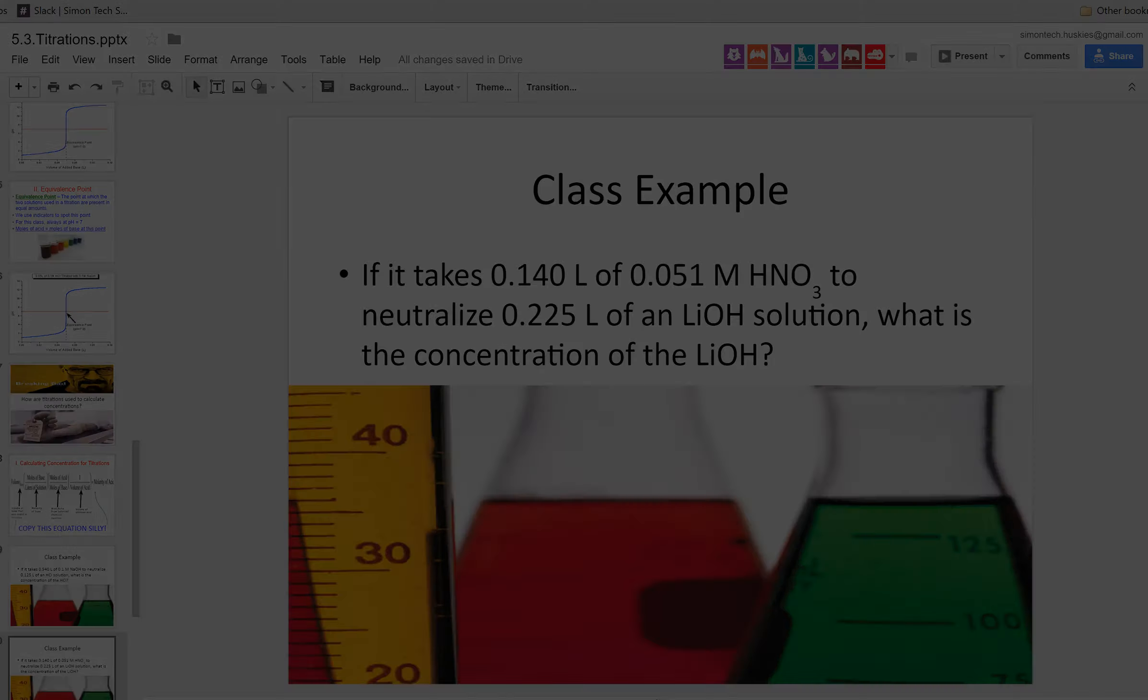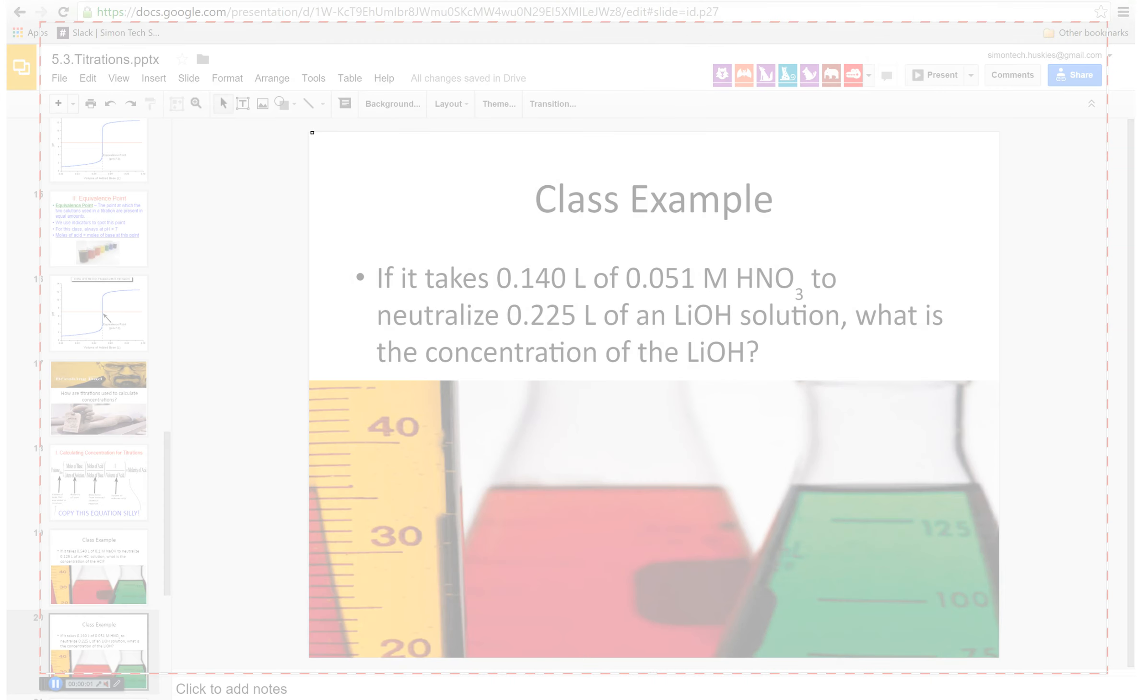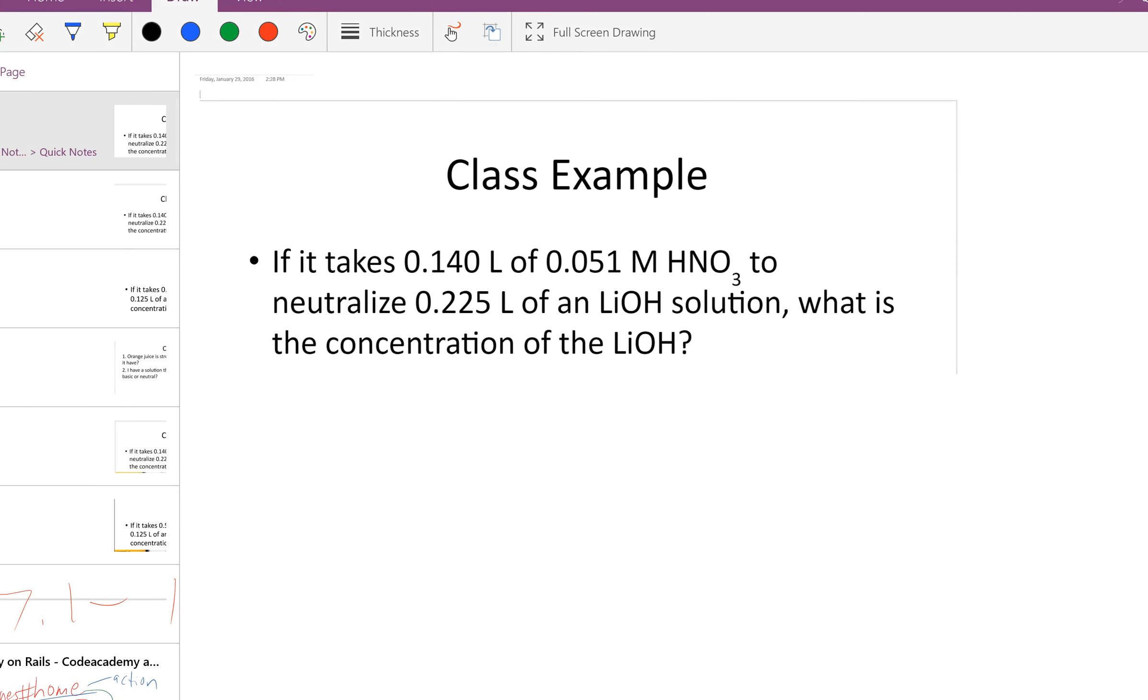Okay, if I'm trying to solve for the concentration of an unknown base, and it tells me that it takes 0.140 liters of 0.051 molar HNO3, which is an acid,